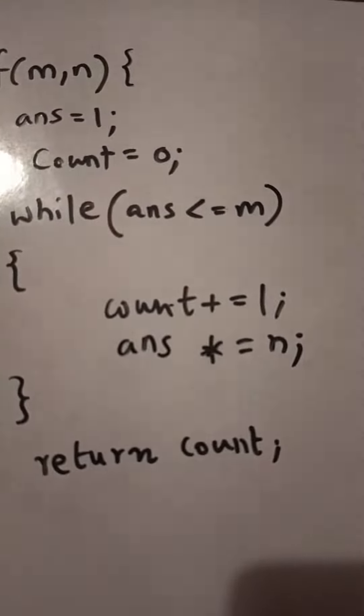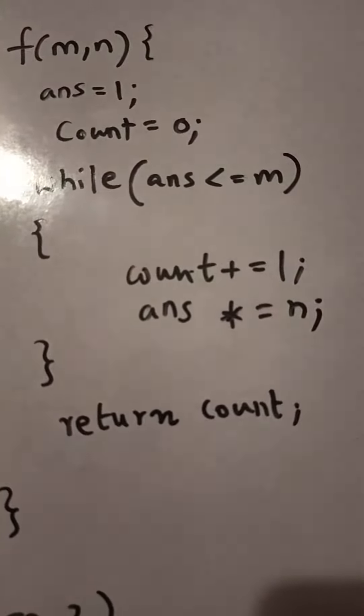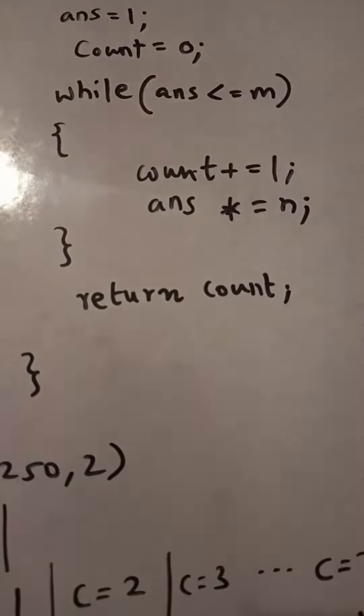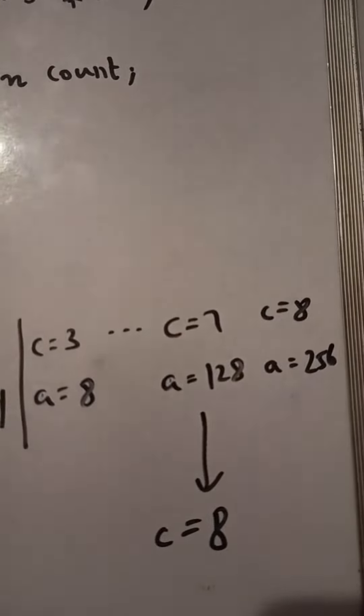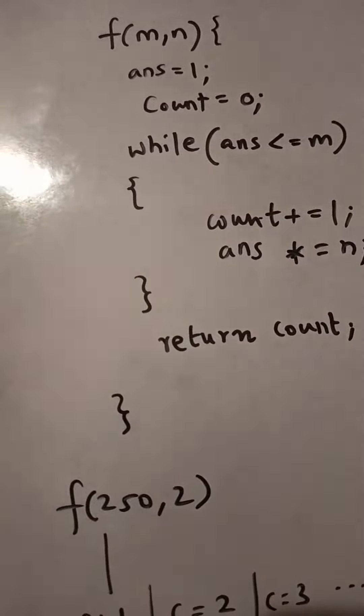After this iteration you will again check the while loop. 256 is less than or equal to 250? No, wrong. You will get out of the while loop and return count. Count value is 8, so 8 will be returned. This is a question of while loop, thank you so much.